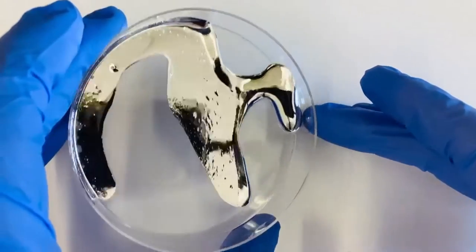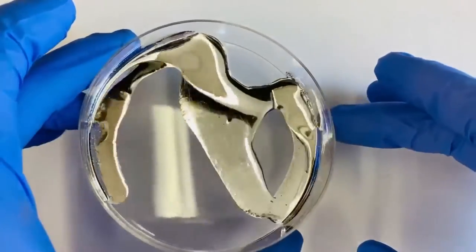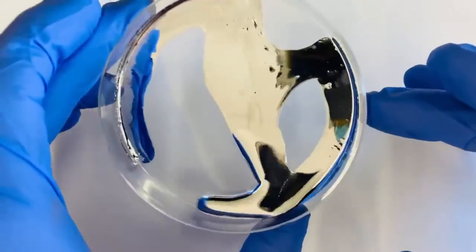Because it melts at a low temperature of negative 19 degrees Celsius, gallinstan is a liquid at room temperature.